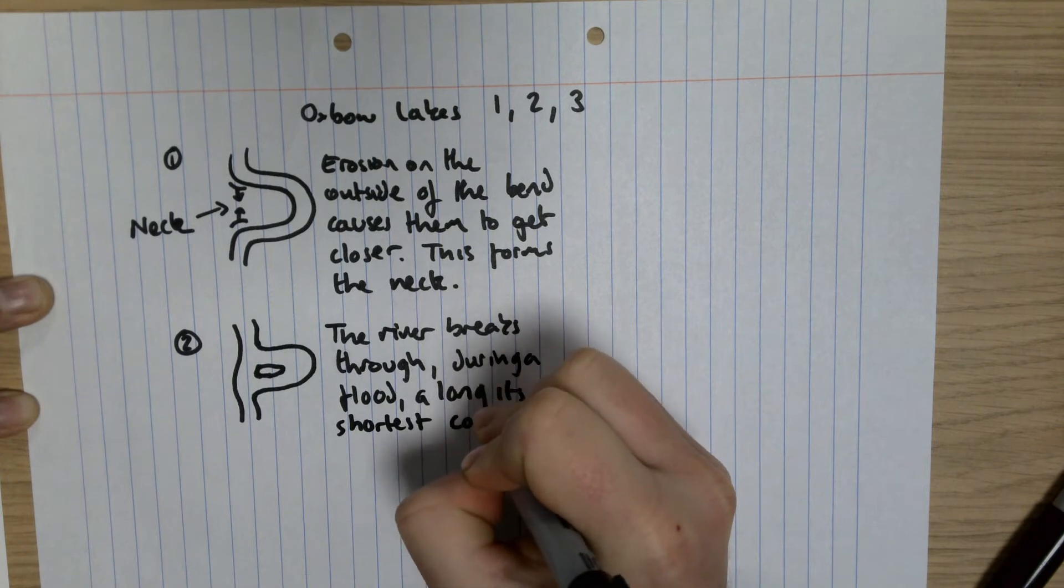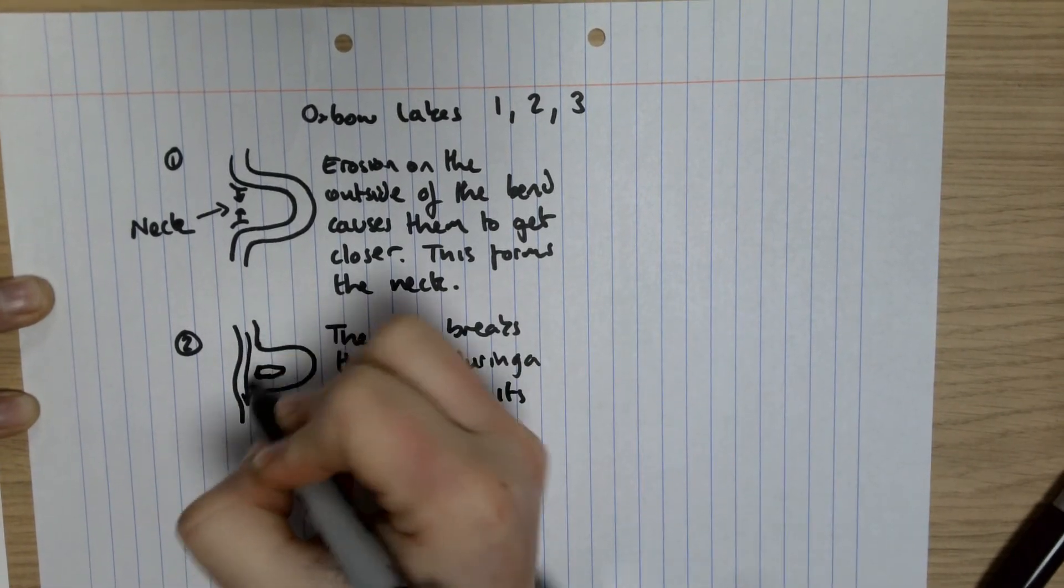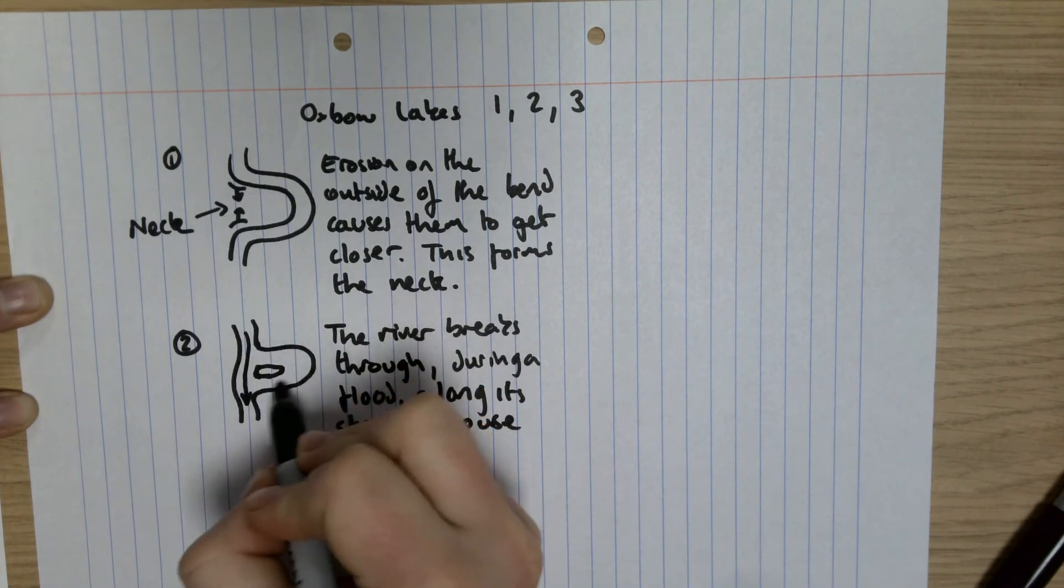So what it means by the shortest course is basically it's going to start flowing through here instead, but this still fills up.